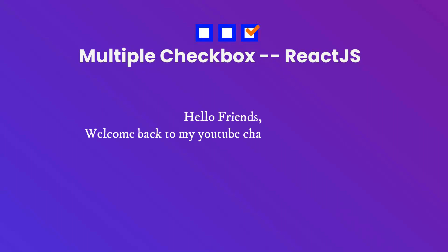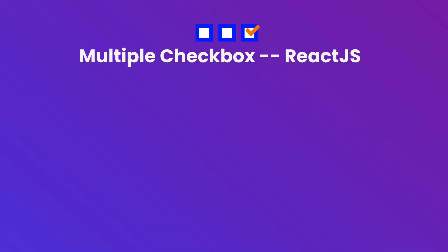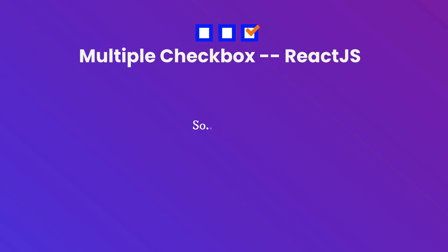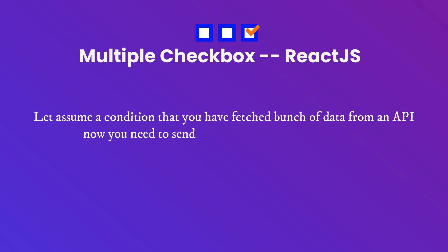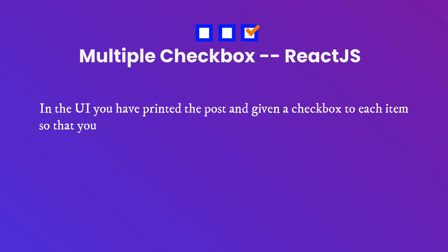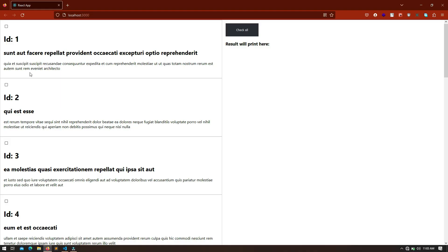Hello friends, welcome back to my YouTube channel CopyCatra. In this video I am going to show you how we can control multiple checkboxes in React JavaScript. Let's start. Assume a condition where you have fetched a bunch of data from an API and you need to send the IDs of posts that you want to delete. In the UI you have printed the posts and given a checkbox to each item so that you can select the item and send them to the delete API inside the payload.